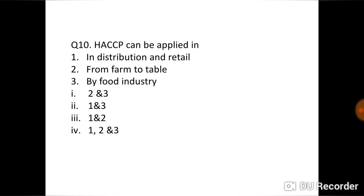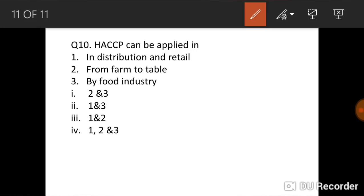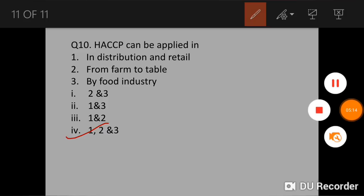HACCP can be applied in: So HACCP can be applied in distribution and retail, from farm to table, by food industry. So it can be applied to all of the three. In distribution and retail, from farm to table, and by food industry, it can be applied to all of the three. So this is the second part. Third part will come soon. Thank you for watching.